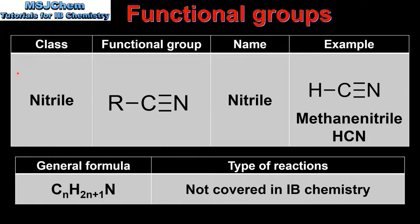Next we look at the nitriles. The class name and functional group name are both nitrile. The nitrile functional group is a carbon atom with a triple bond to a nitrogen atom. Here we have an example which is methane nitrile. The general formula is CnH2n+1N. The reactions of the nitriles are not covered in IB chemistry.